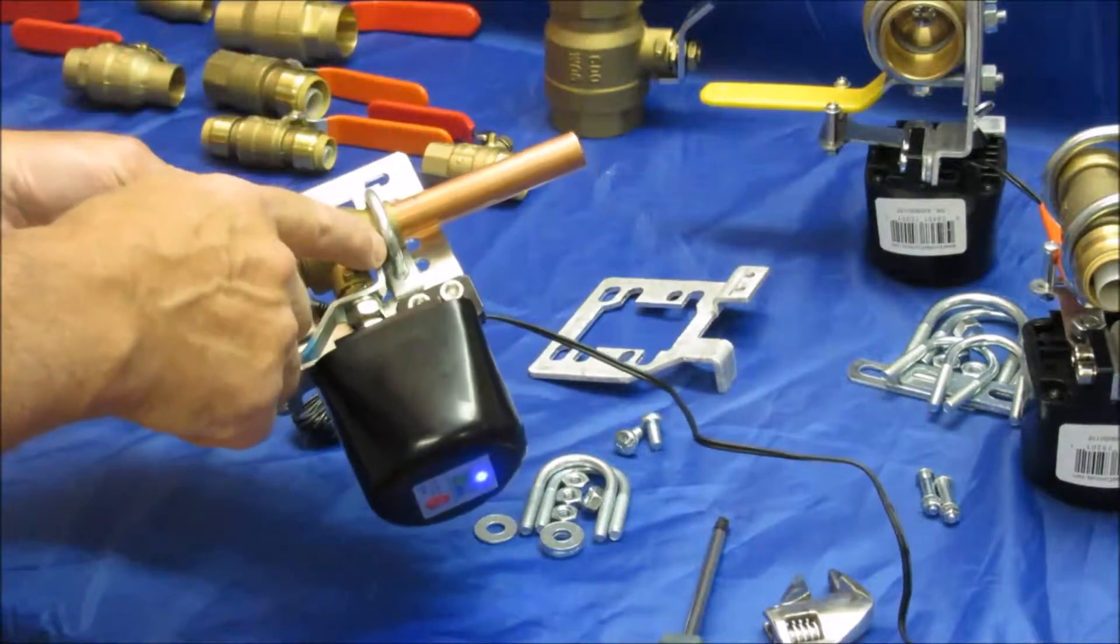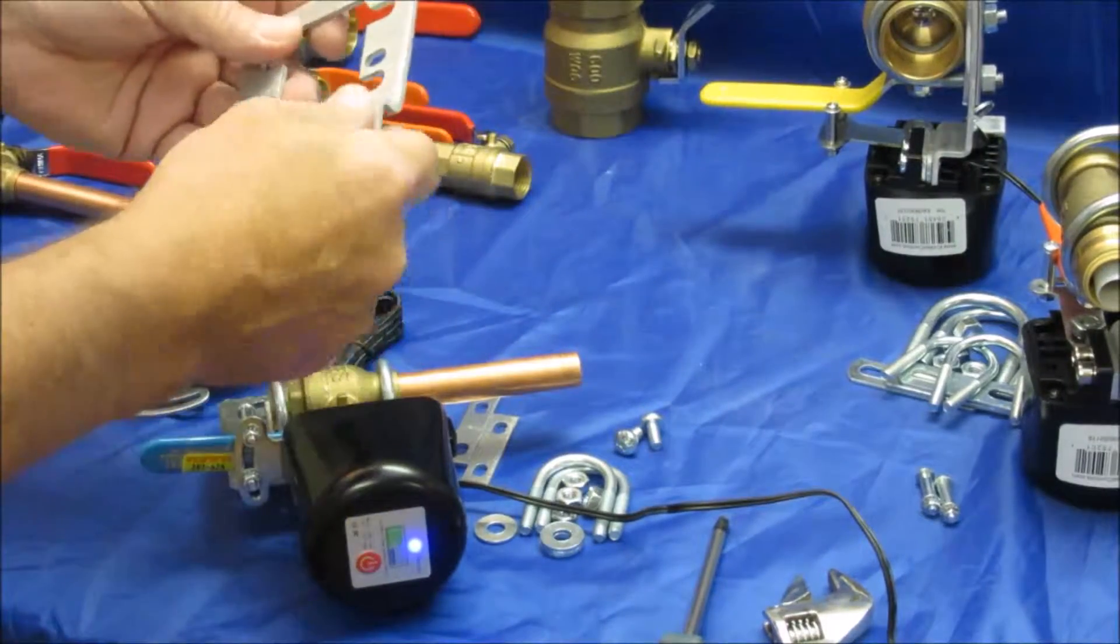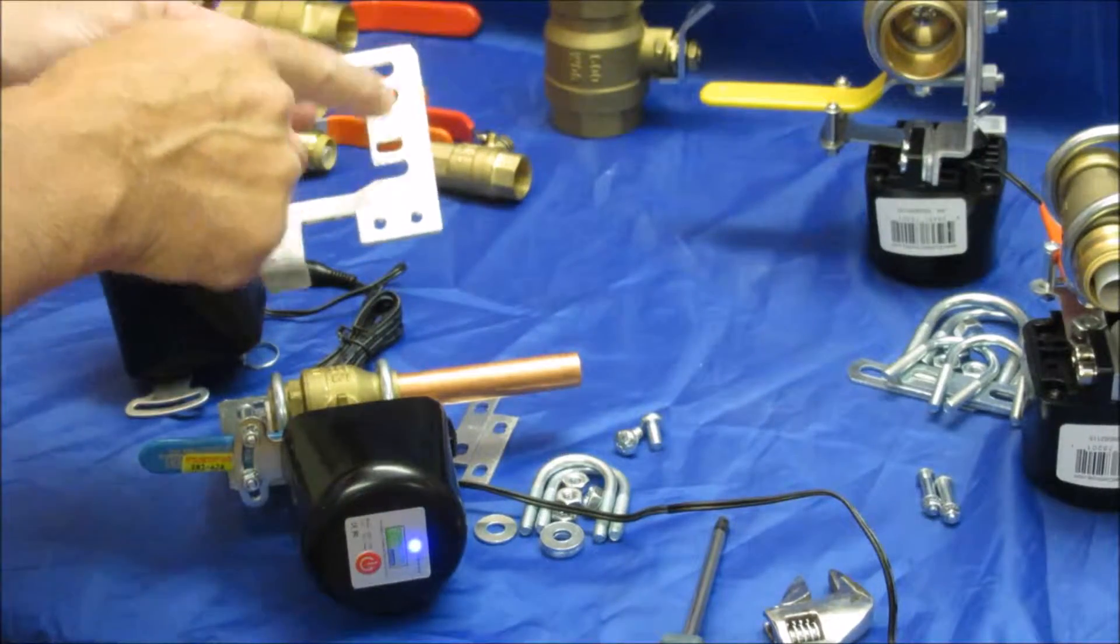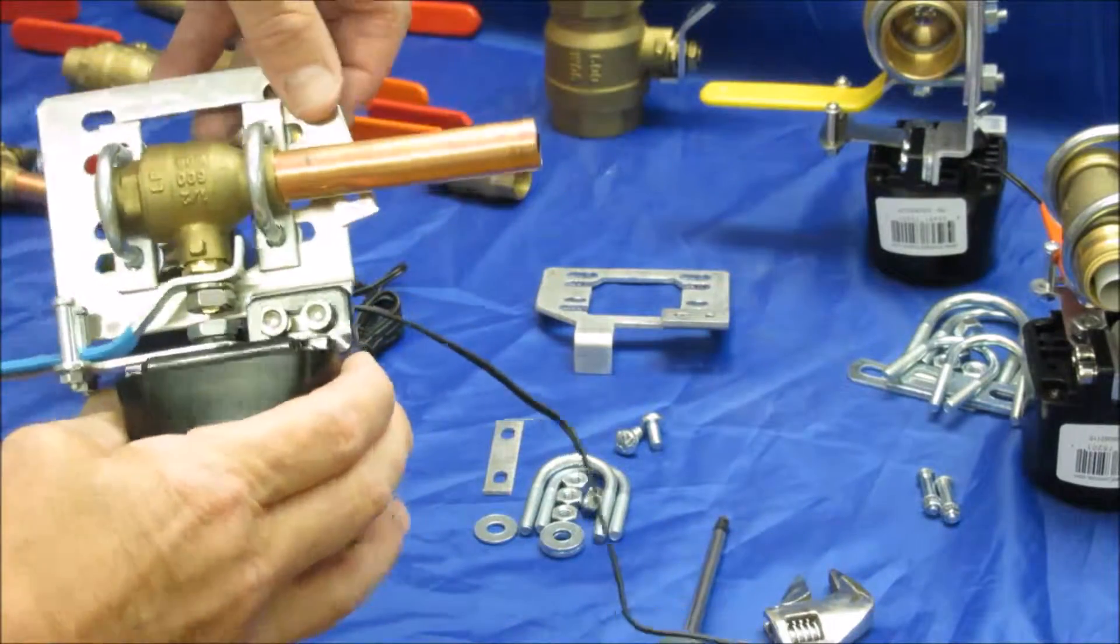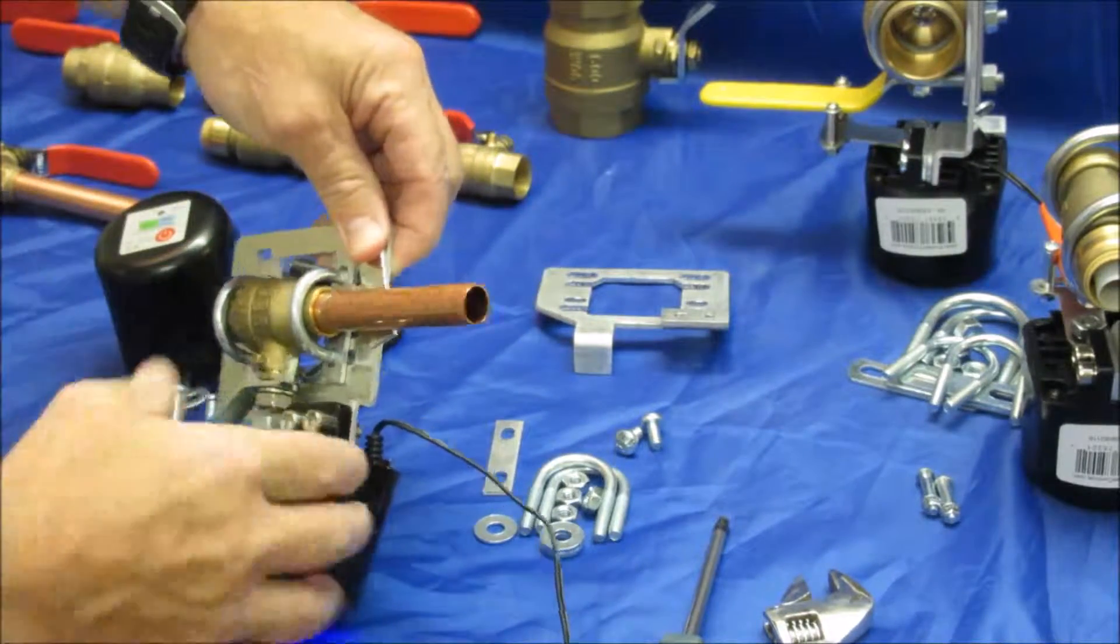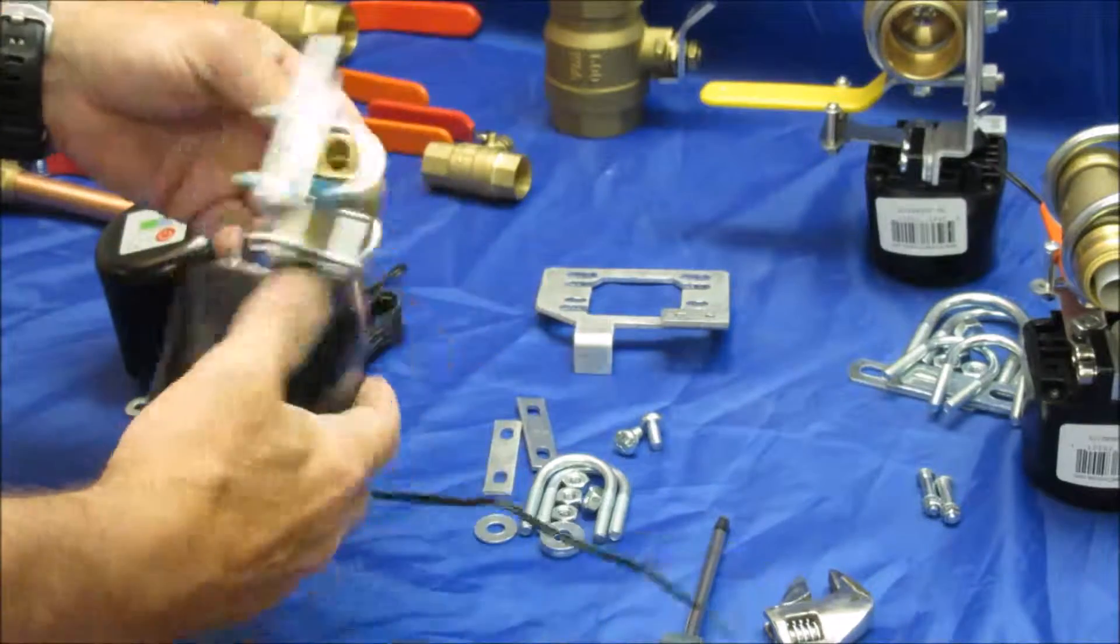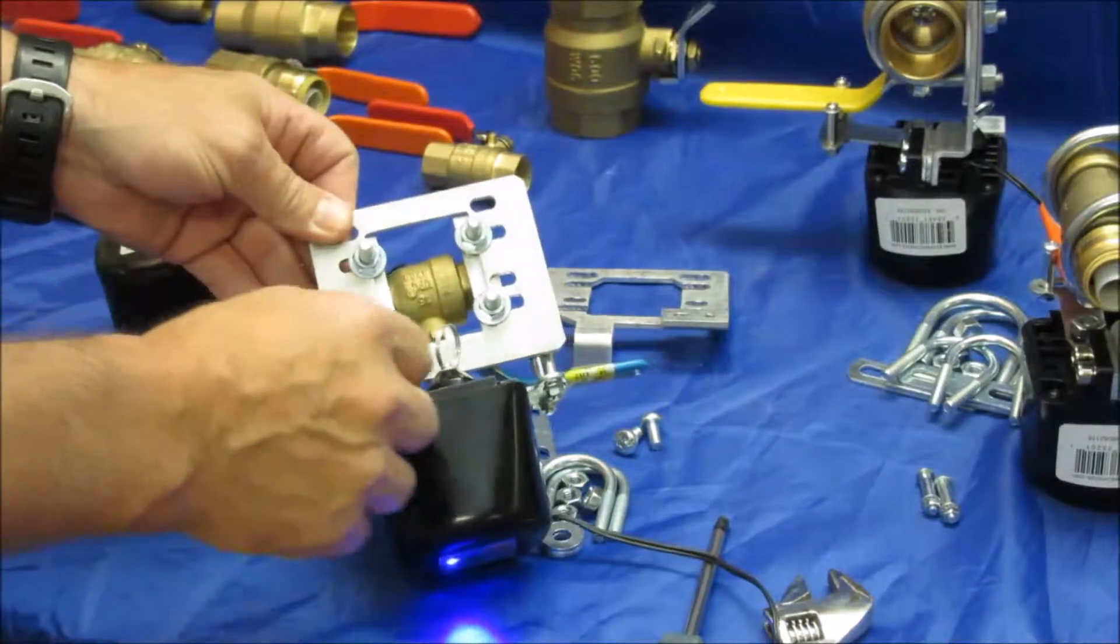So you use the smallest U-bolts and the lower slots of the bracket. You add the spacers here to bring it out this way a bit to center it out on both sides. Put the washers and the nuts on the back.